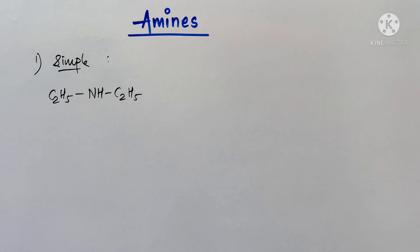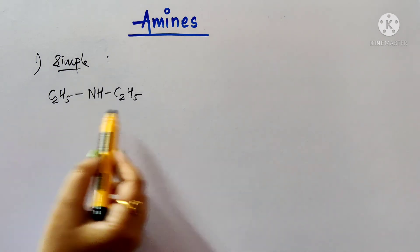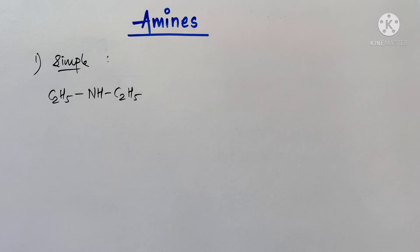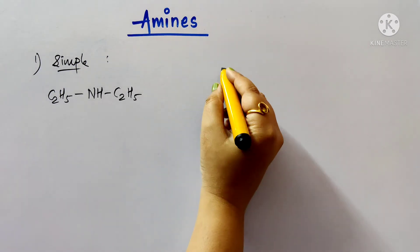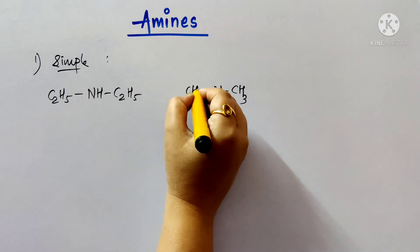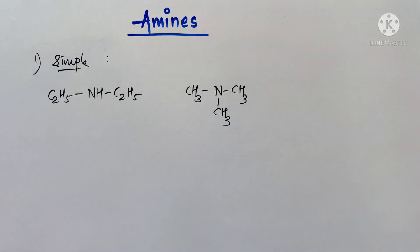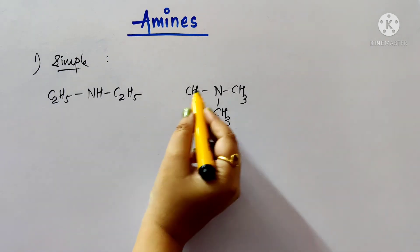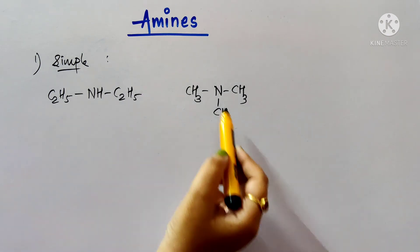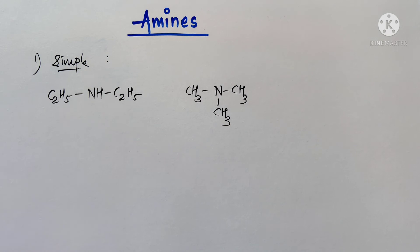For simple or symmetrical amines, an example is a secondary amine where two ethyl groups are attached to nitrogen — since both alkyl groups are the same, this is a simple or symmetrical amine called diethylamine. For a tertiary example, three methyl groups are attached to nitrogen, giving trimethylamine, which is also a simple or symmetrical amine.